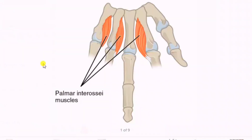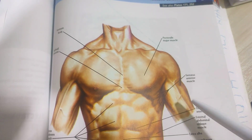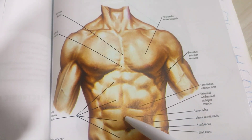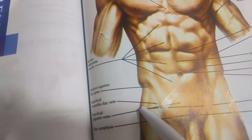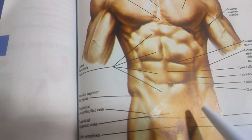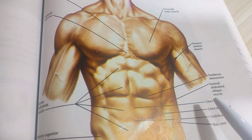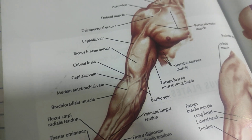Moving to the hand and forearm, this picture shows the pronator teres muscles. Also visible are pectoralis major, sternum body, deltoid muscle, serratus anterior muscle, external oblique muscle, linea alba, linea semilunaris, umbilicus, superficial circumflex vessels, anterior superior iliac spine, and inguinal ligaments.